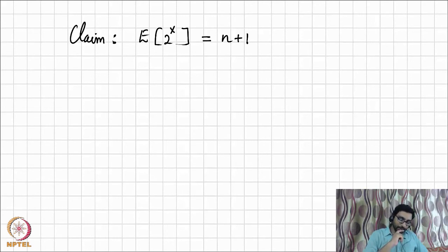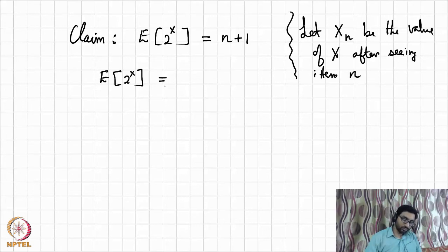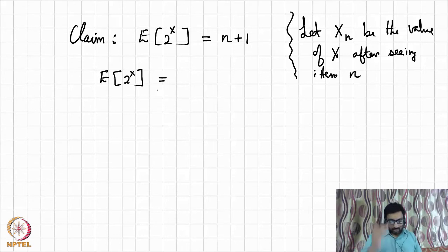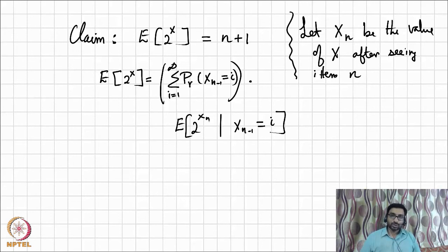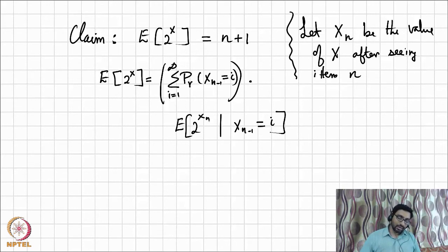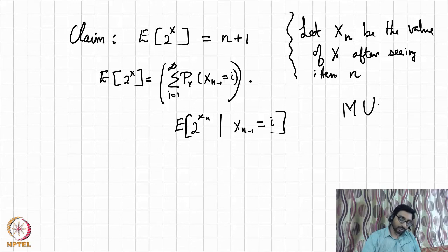Let X_n be the value of X after seeing item n. The expectation of 2^(X_n) can be written as the summation over i from 1 to infinity of P(X_{n−1} = i) times the conditional expectation of 2^(X_n) given X_{n−1} = i. For reference, you can verify this formula in Mitzenmacher–Upfal, page 27.